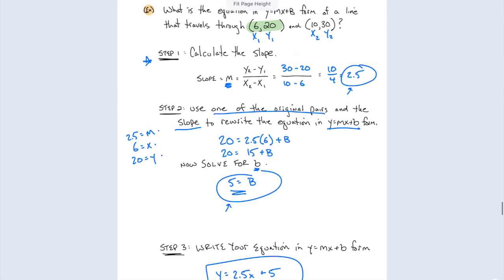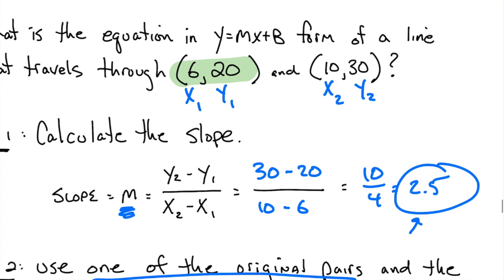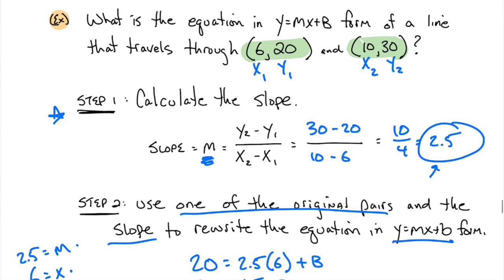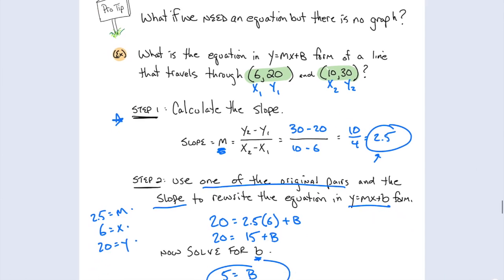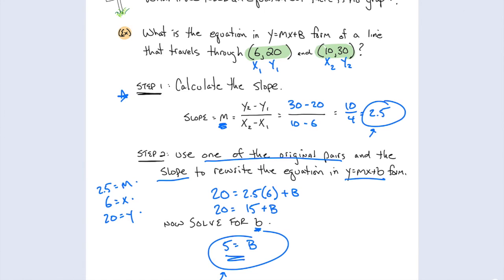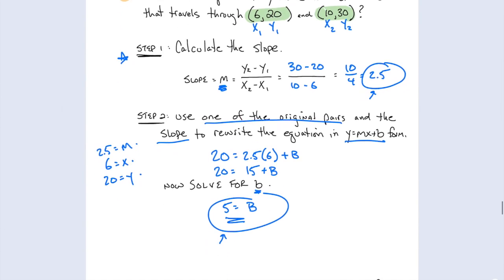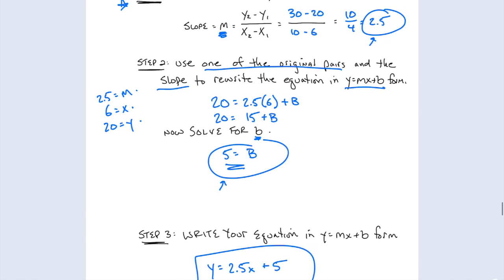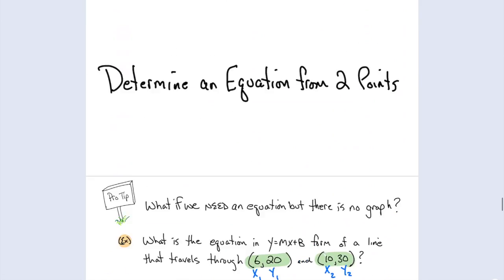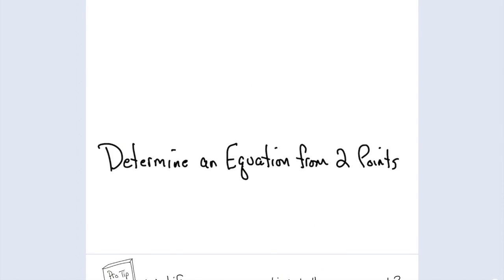Now, teachers can make these problems more difficult by choosing more difficult numbers in their two-ordered pairs. They can choose them so you have decimals, fractions, negatives. But the truth is the technique is the same. Calculate the slope, pick a pair, and stuff it back into your equation along with your slope, and then solve for b. That's it. So good luck determining an equation from two points.